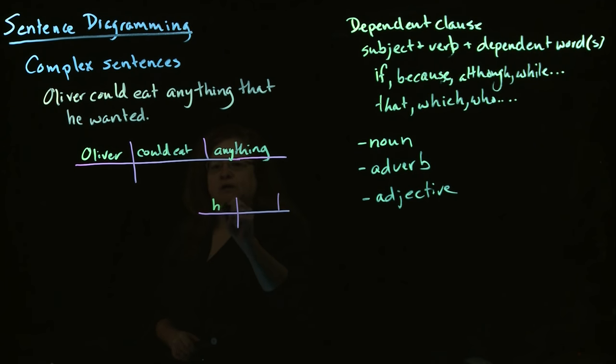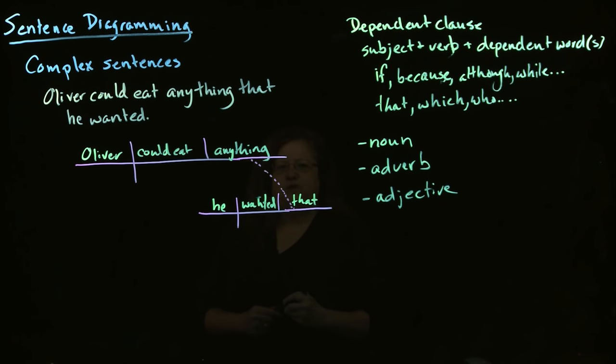It's he wanted. And we actually have our that is our object of the sentence, as well as being our dependent word. And so, what we do is we draw a dotted line from the thing that's being modified to the part of the clause that connects it. That is to say, we connect to the dependent word.